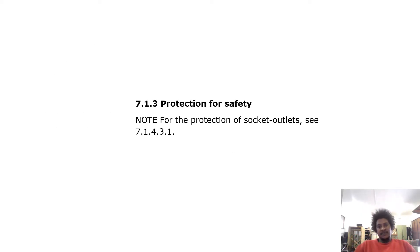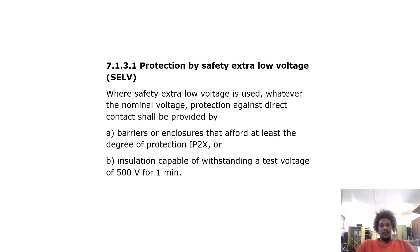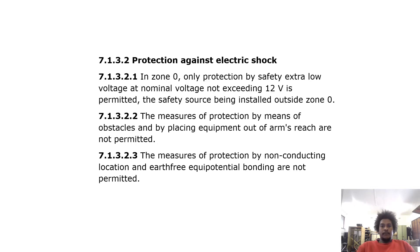Protection for safety — note for the protection of socket outlets, see 7.1.4.3.1. Protection by safety extra low voltage (SELV): where SELV is used, whether the nominal voltage, protection against direct contact shall be provided by barriers and enclosures that afford at least the degree of protection IP2X, or insulation capable of withstanding a test voltage of 500 volts for one minute.